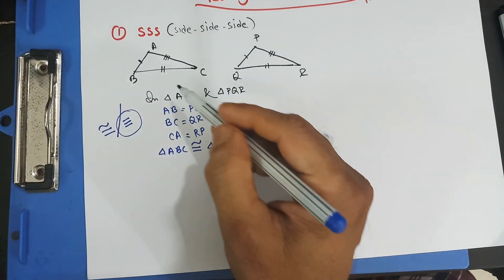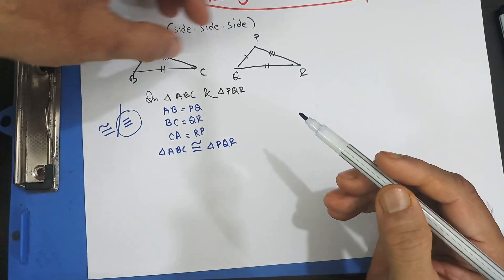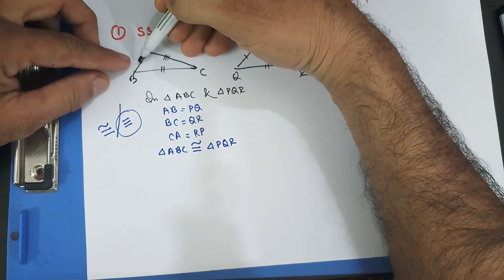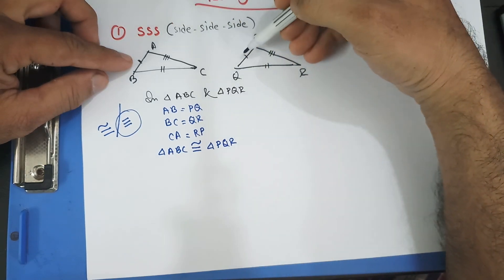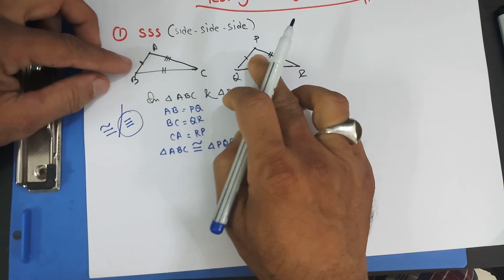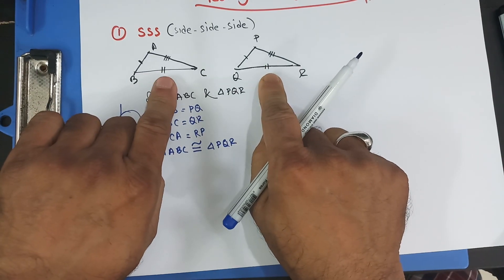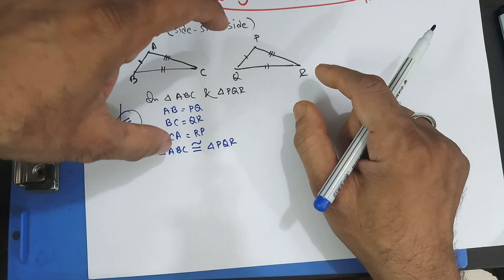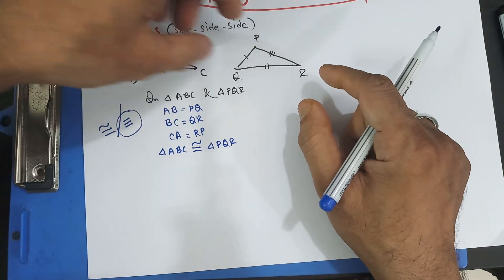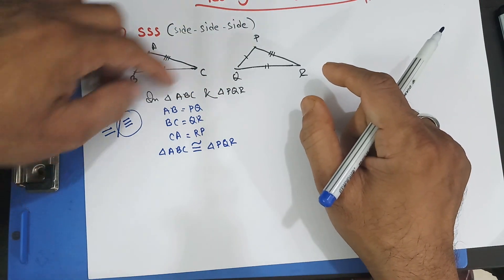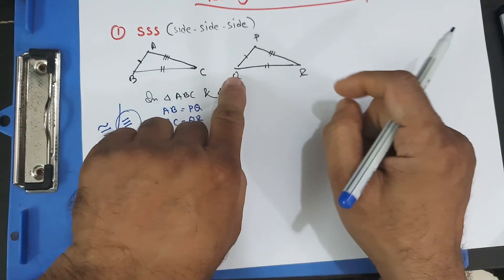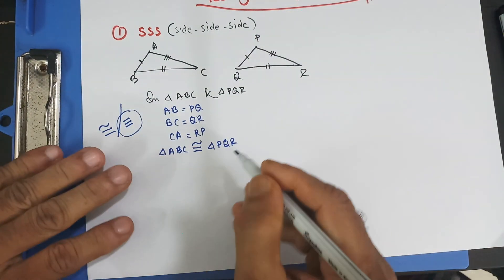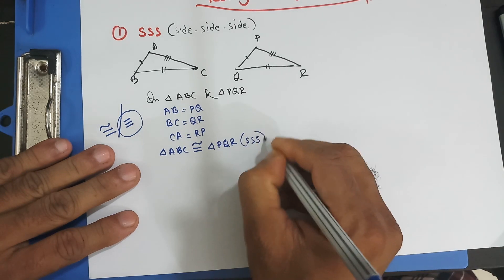Notice that AB and PQ are marked with one bar, meaning they are equal. In geometry, when you see one bar on one side and one bar on another side, those two sides are equal. Two bars match with two bars — a two-bar side and a three-bar side are never equal. So AB equals PQ with one bar, BC equals QR with two bars, and CA equals RP with three bars. You can then write SSS as the test of congruency.